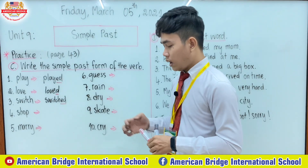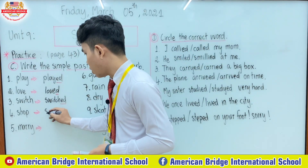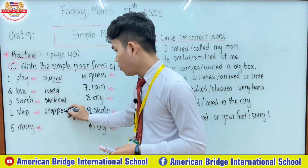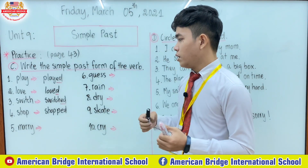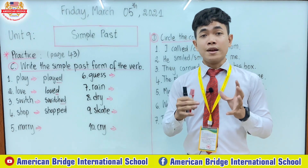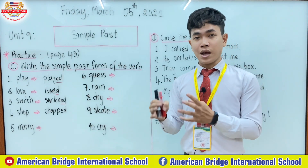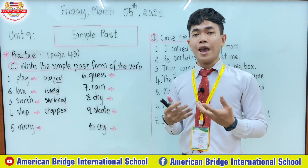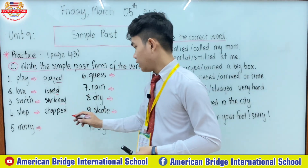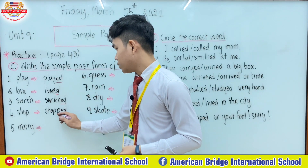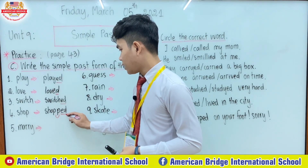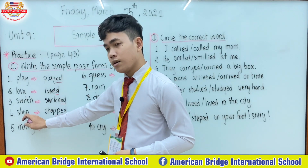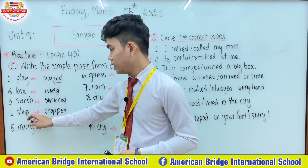Number four: the verb 'shop'. For the verb 'shop', we have to form the verb spelled with vowel plus consonant — you have to double the consonant and add -ed. The verb 'shop': we need to double the letter p and add -ed. Shopped. Because we spell it with vowel o and consonant p.